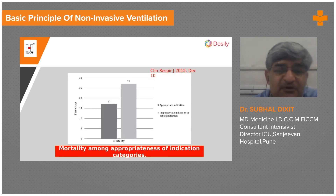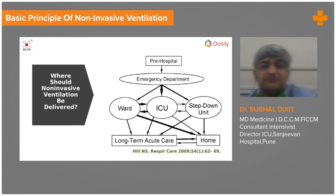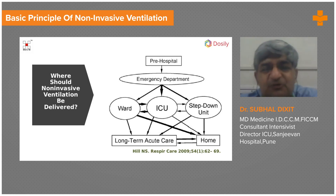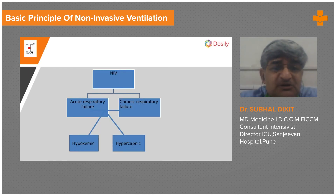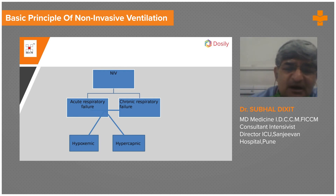Mortality also depends on the category of use: with appropriate indication, mortality can be reduced from about 50 percent to about 17 percent, but if NIV is used in non-indicated situations, mortality can reach 25 to 30 percent. NIV can be used at various levels — transport, emergency departments, wards, ICU, step-down units, and long-term home care — using small portable machines. The important indications are non-invasive ventilation in acute respiratory failure (hypoxemic or hypercapnic) and chronic respiratory failure.